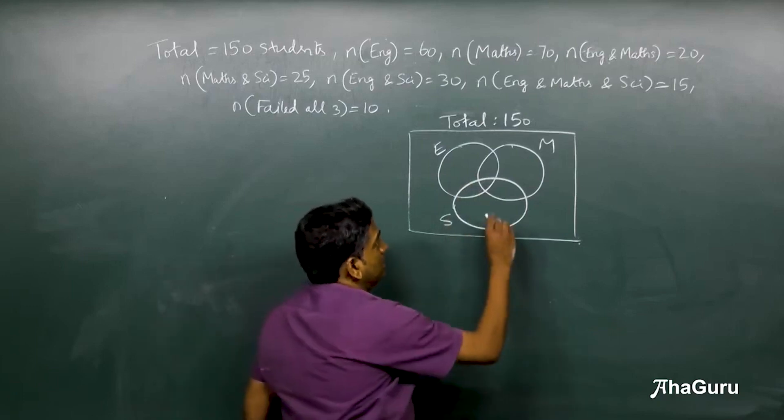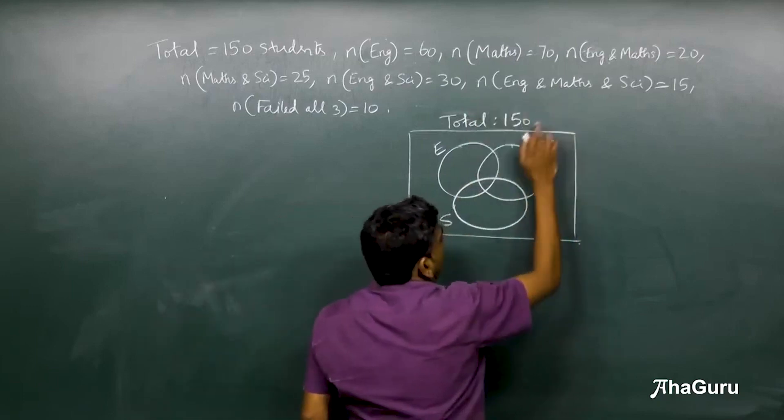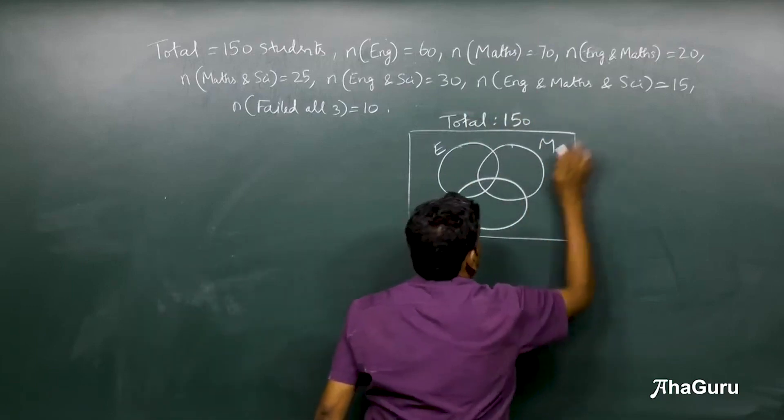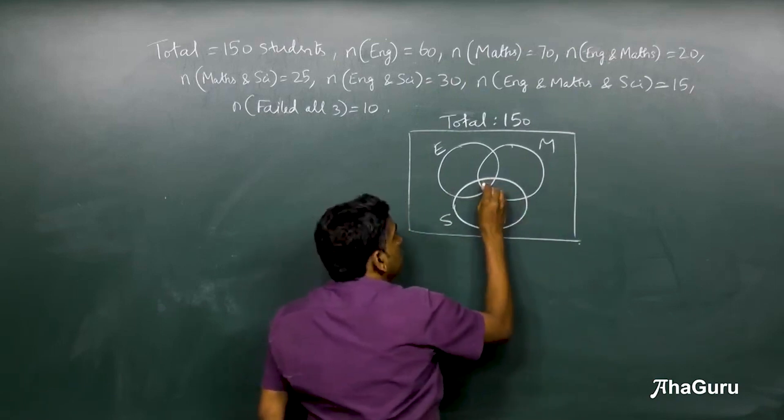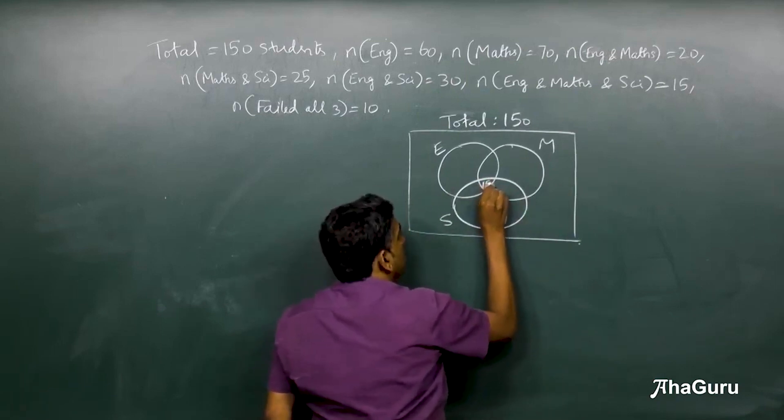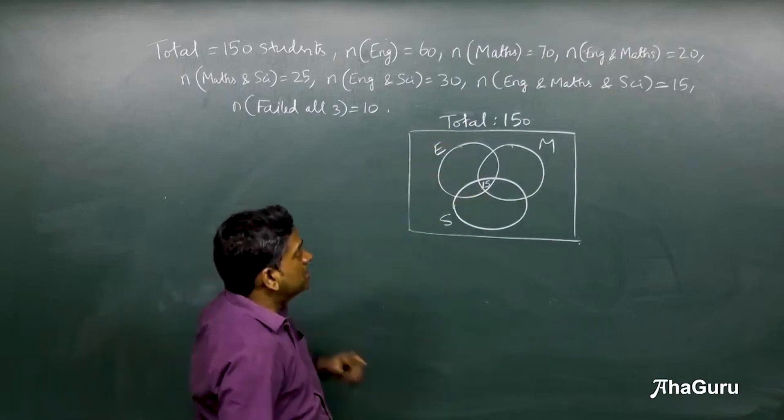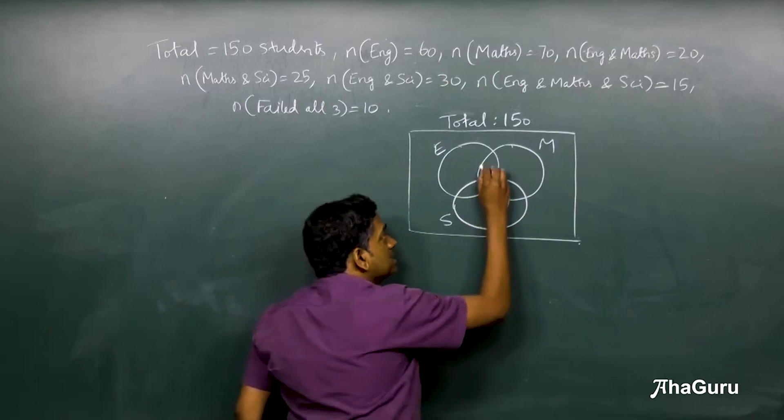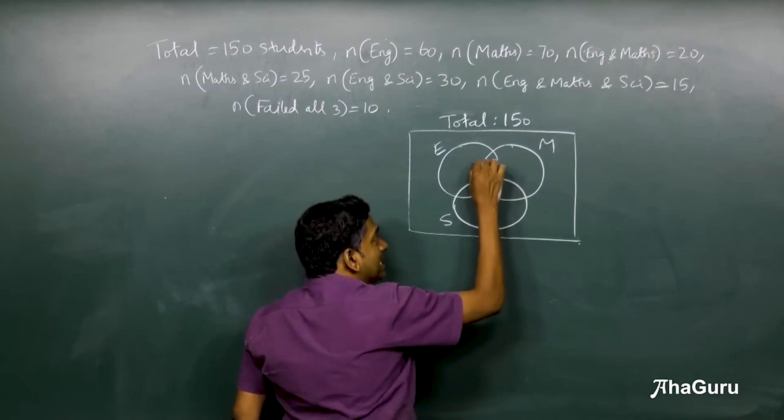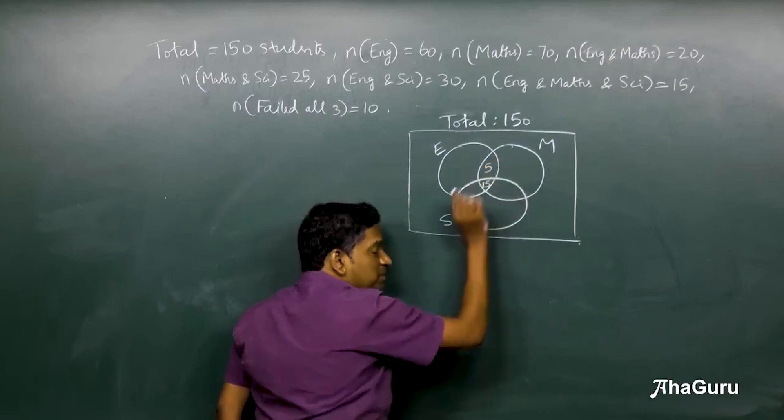Let's look at the separate regions. Let's start with the innermost: English, Math, and Science is 15 people, so this common region is 15. Now we are also told that English and Math is 20. That means this English and Math common is 20, which means English and Math but not Science must be 5.